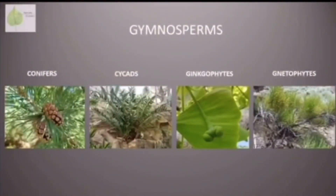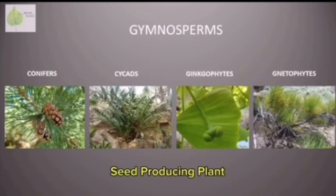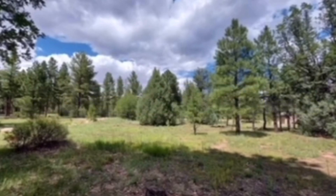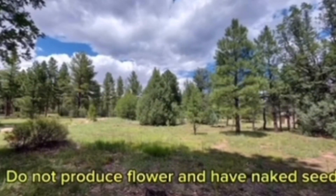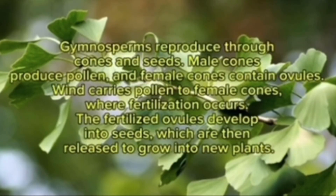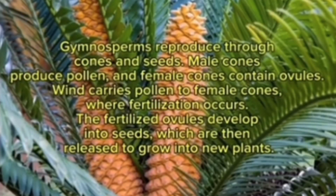The next one is gymnosperms. They have four phyla and are called seed-producing plants. Gymnosperms are technically woody plants including trees and shrubs — they do not produce flowers and have naked seeds. Gymnosperms reproduce through cones and seeds and undergo fertilization.